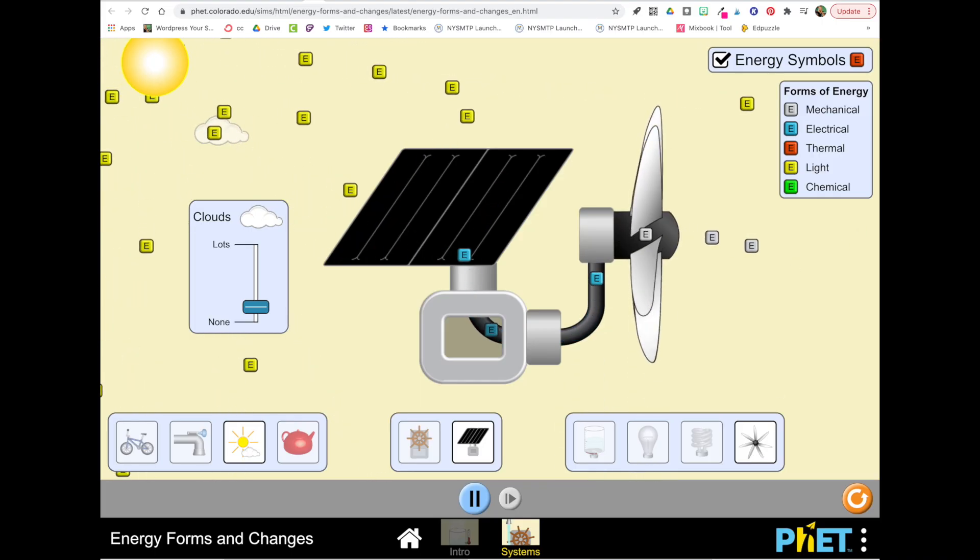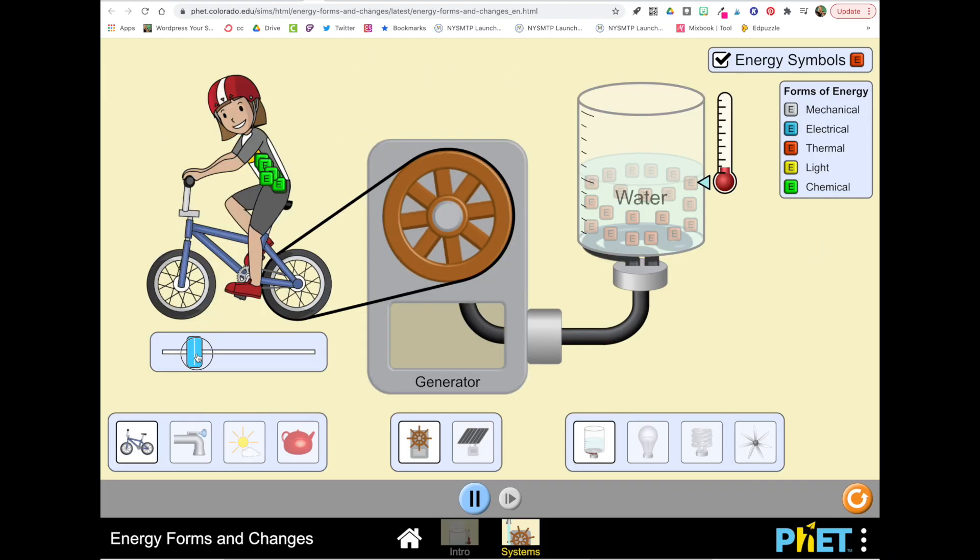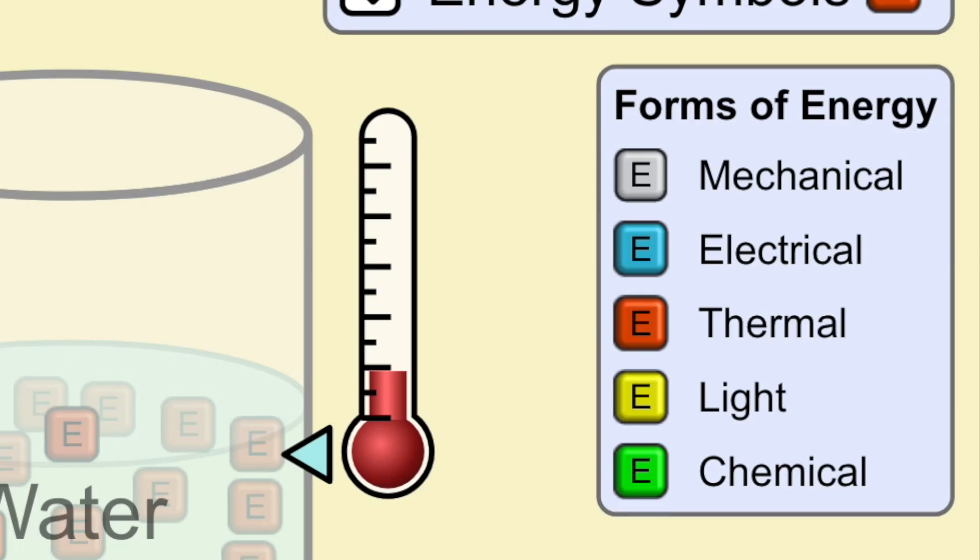As you explore the system, it's going to be very important that you notice up in the upper right hand corner the forms of energy, because when you turn something on in the system you're going to see some E's appear. What you really need to notice is that those E's stand for different forms of energy.